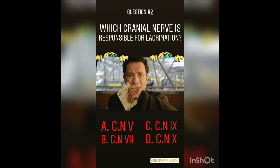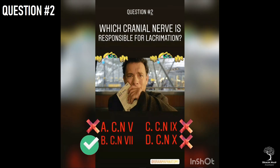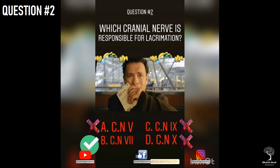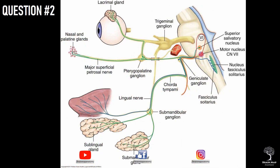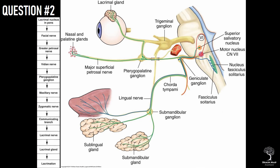Question 2. Which cranial nerve is responsible for lacrimation? The right answer is option B, cranial nerve 7, which is the facial nerve. The lacrimatory nucleus is present in the brainstem at the level of the pons. The fibers from the lacrimatory nucleus carry the presynaptic parasympathetic fibers destined to reach the lacrimal gland. These fibers are carried by nervus intermedius of the facial nerve.